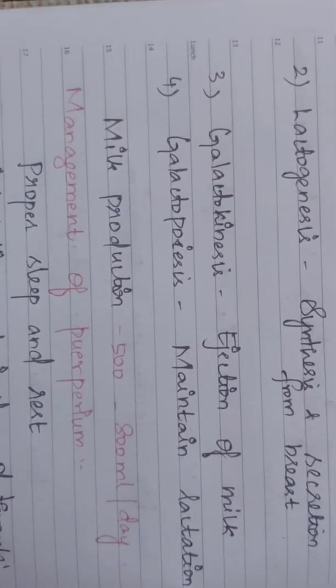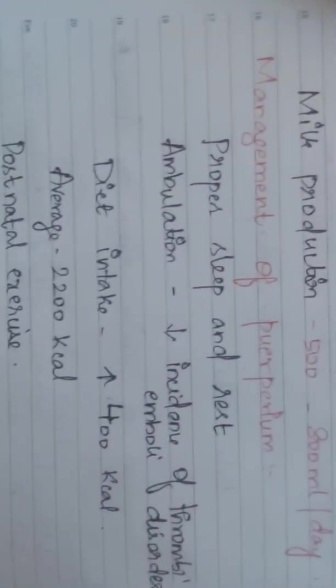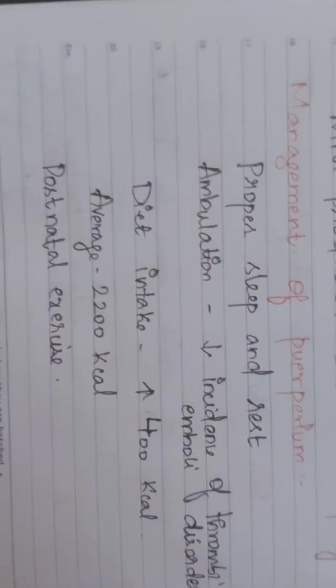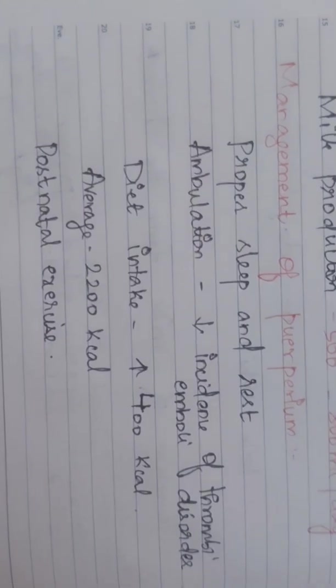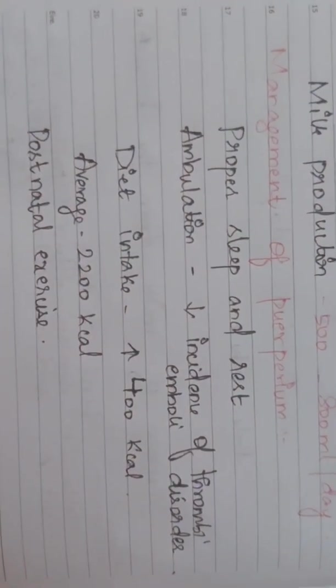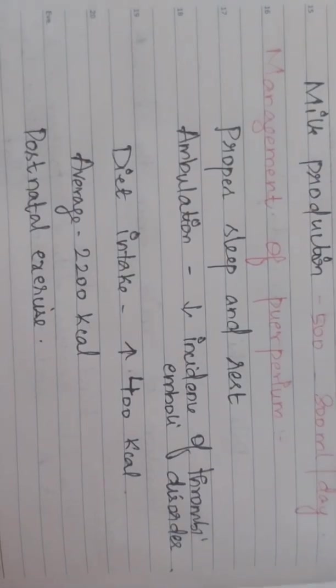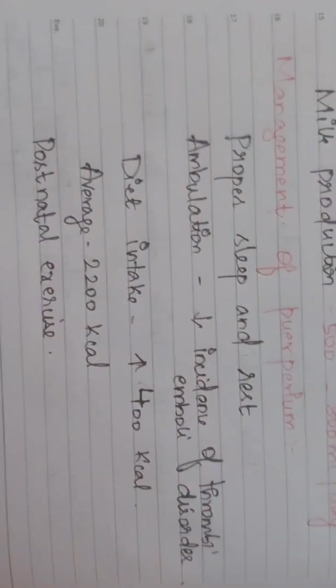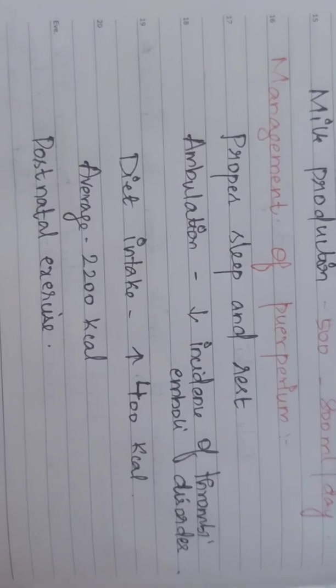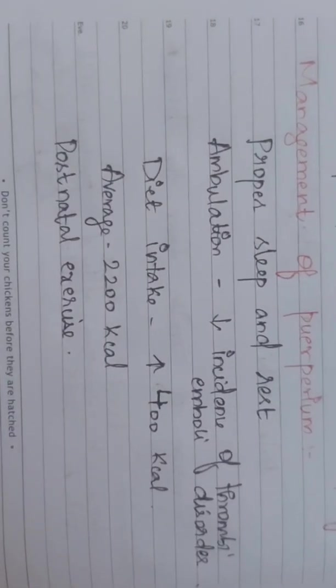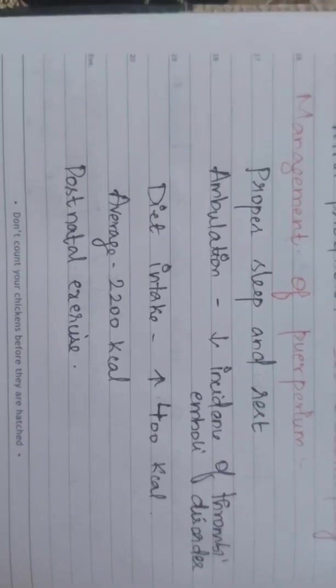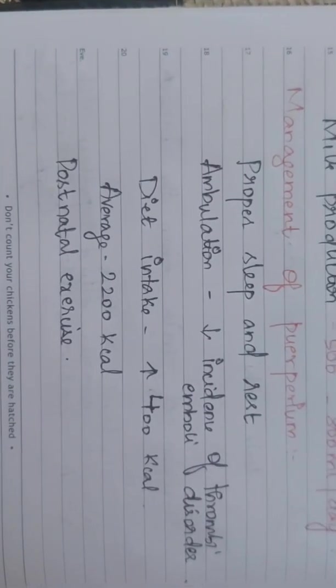Management of puerperium: proper sleep and rest, ambulation and movements including range of motion to reduce incidence of thromboembolic disorders, diet with extra 300 to 400 calories, and post-natal exercise which we will teach as another topic.